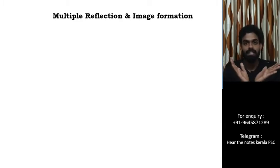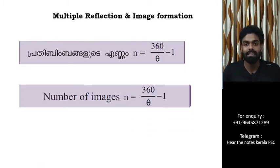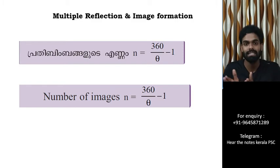The next topic is multiple reflection and image formation. When two mirrors are placed at an angle, multiple images are formed. The number of images is given by the equation: n = 360/θ − 1, where θ is the angle between the mirrors.